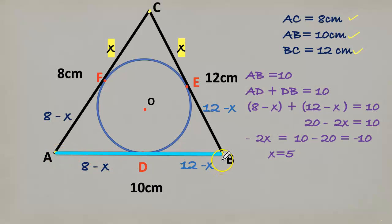AB is 10 cm. So AD plus DB equals 10 cm. AD is 8 minus X, and DB is 12 minus X. So 8 plus 12 is 20 minus X minus X minus 2X equals 10. Therefore minus 2X equals 10 minus 20 which is minus 10. Therefore X equals 5.